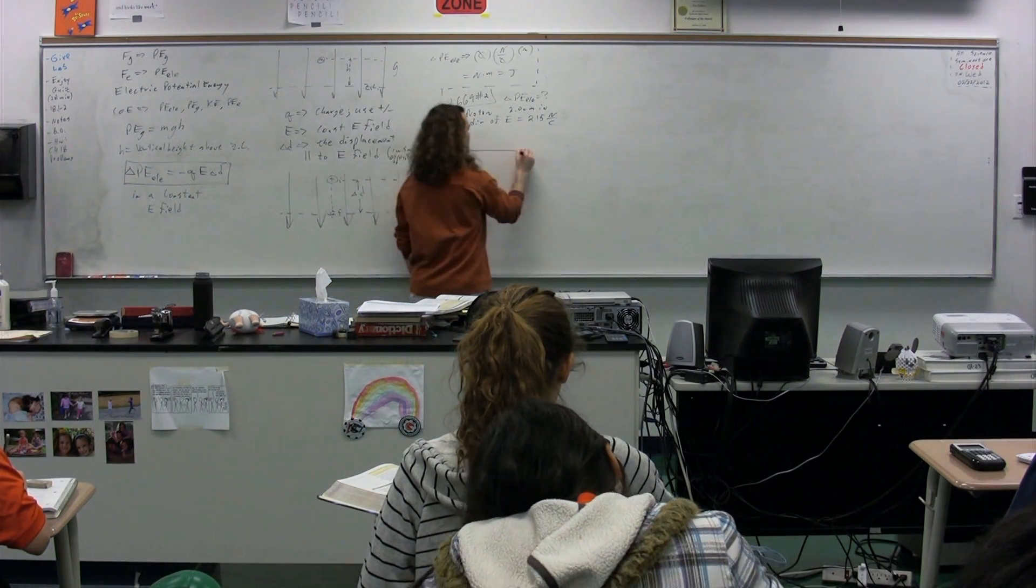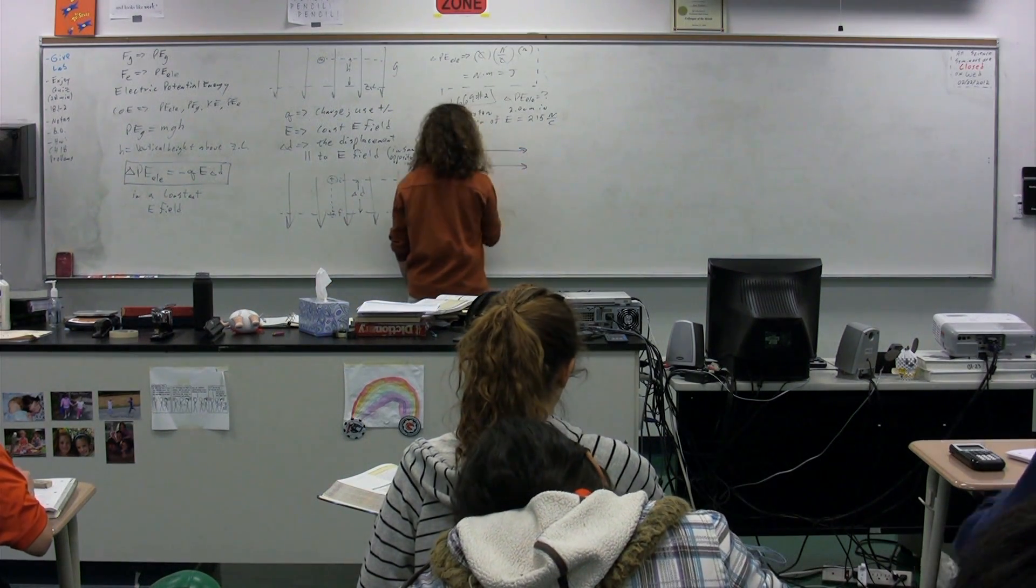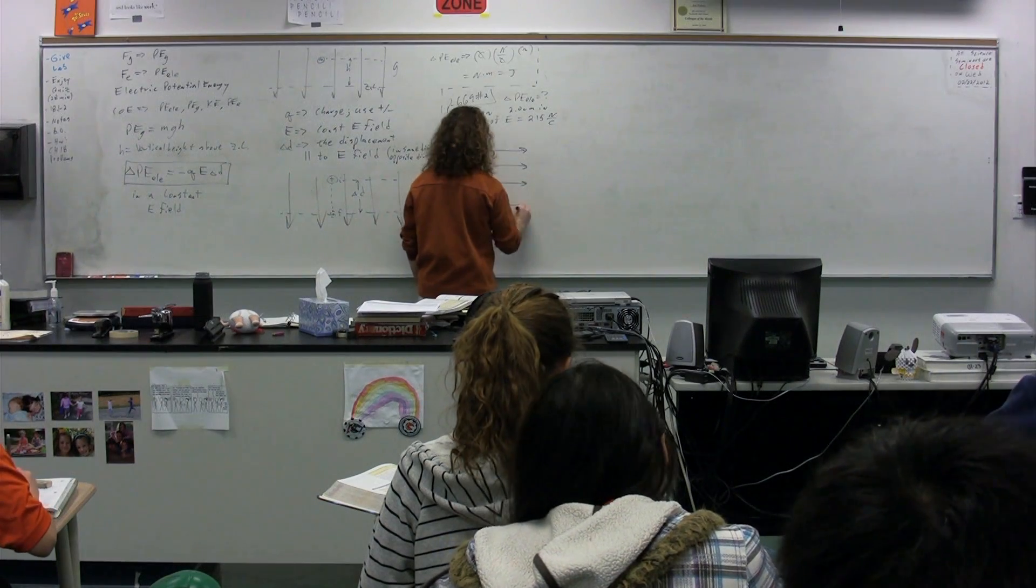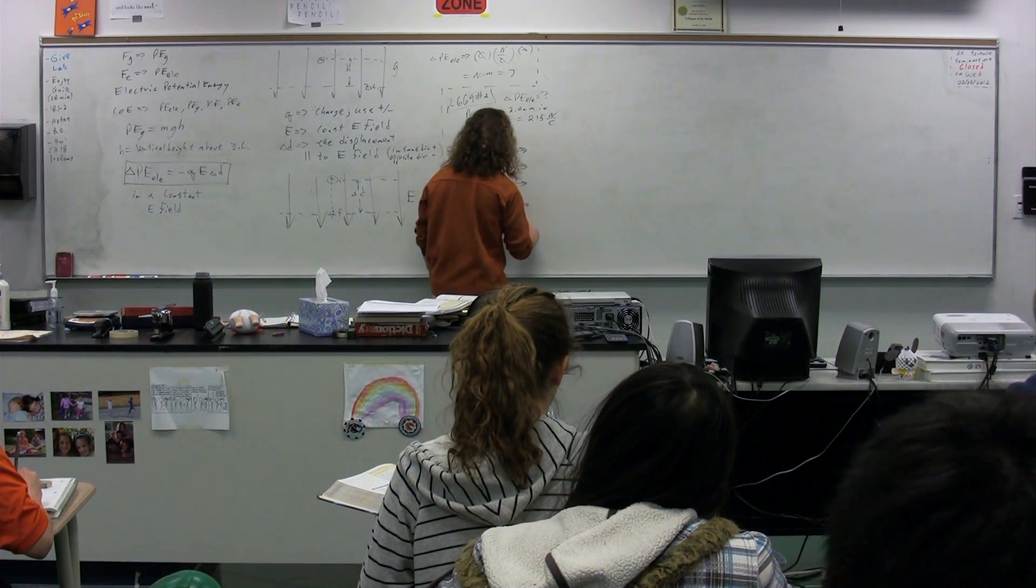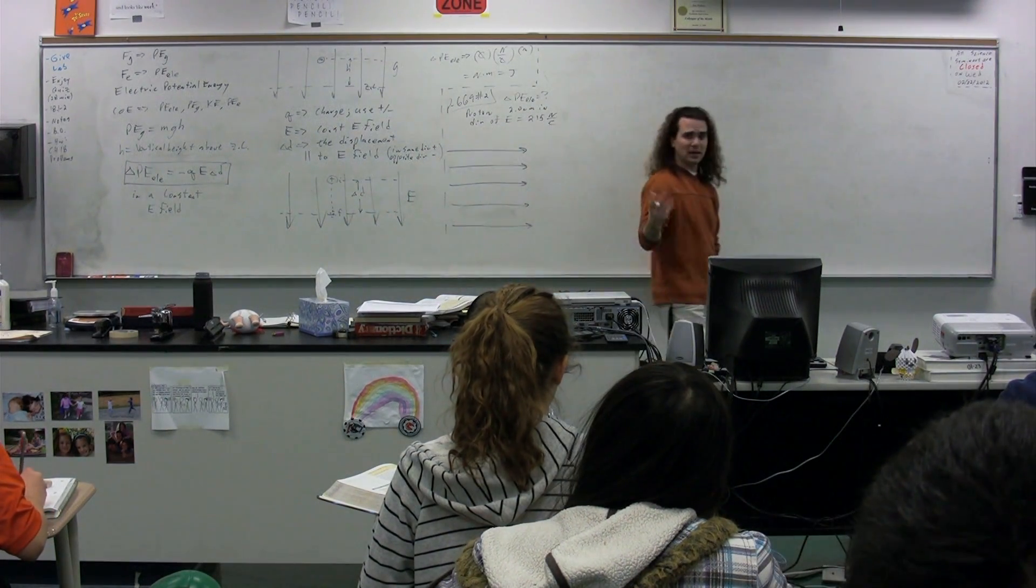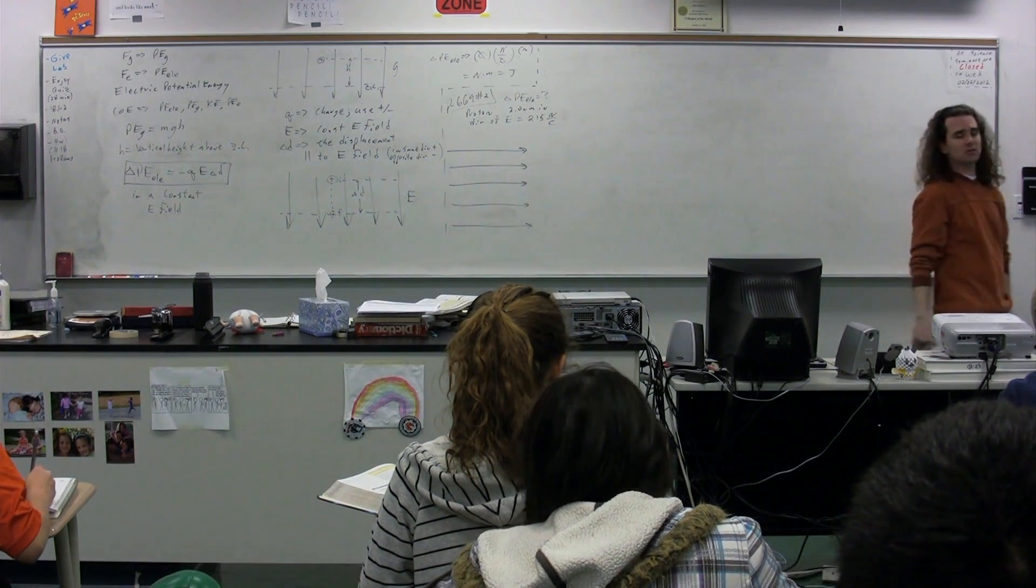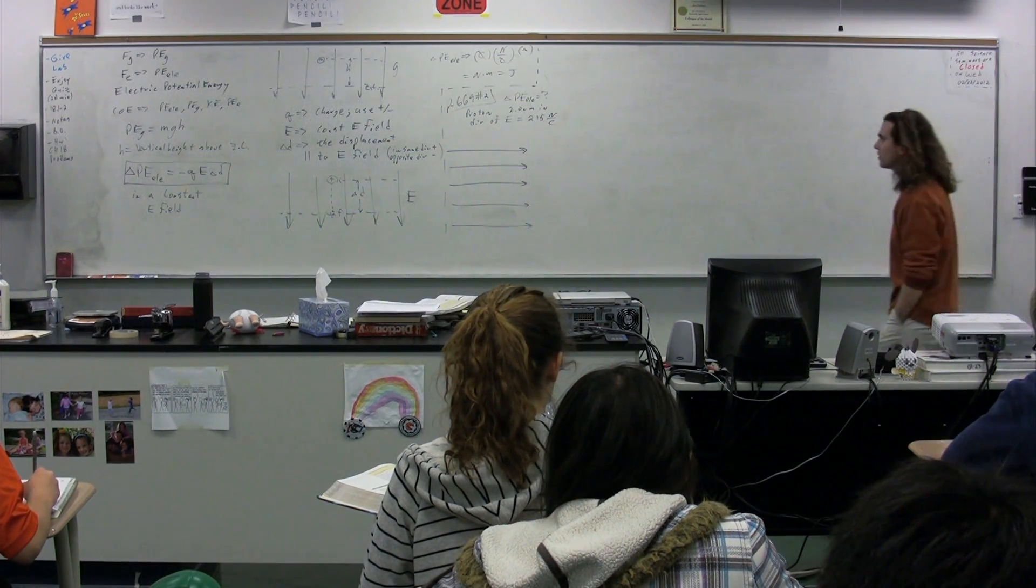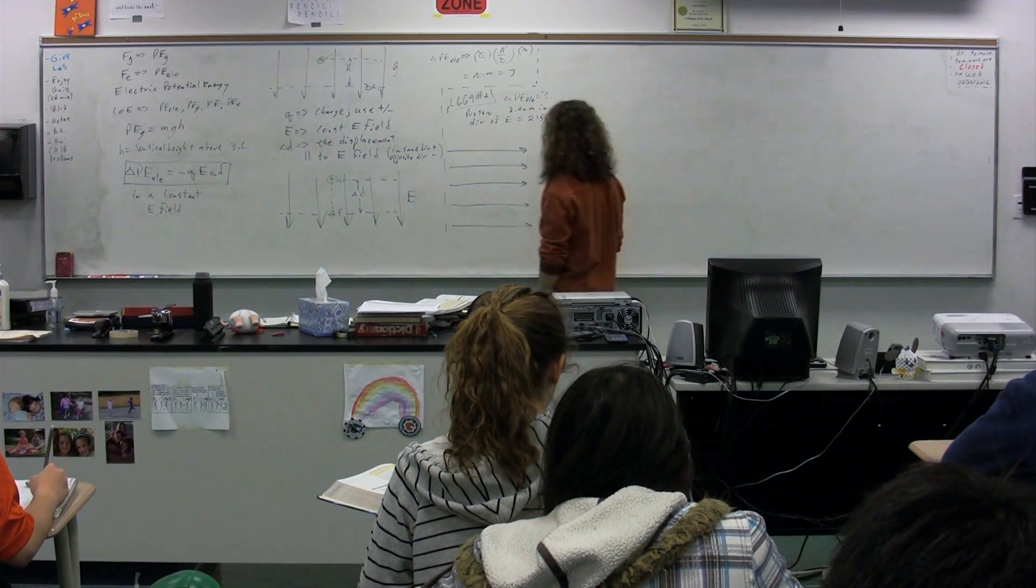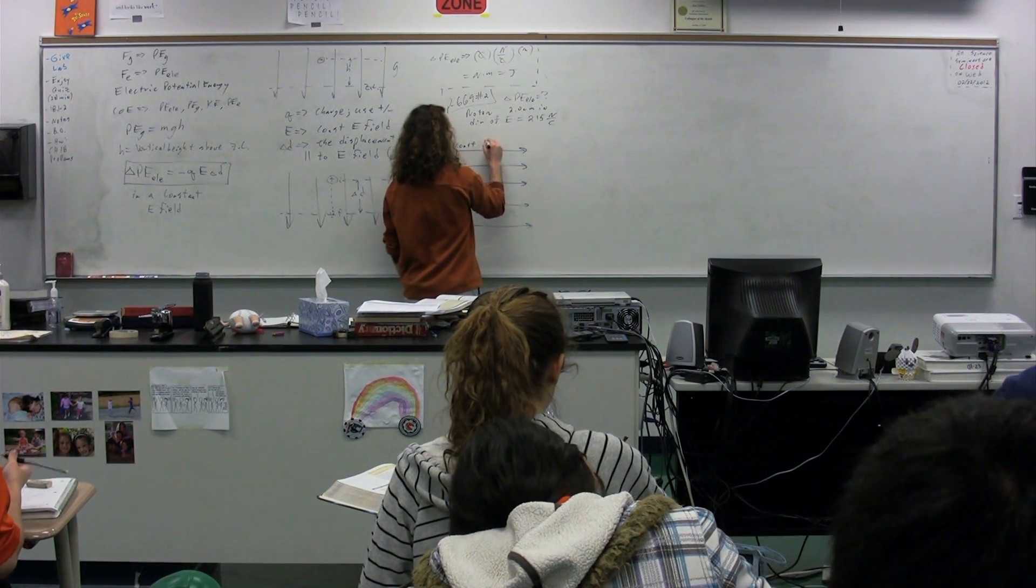So, let's set up a constant electric field and say that it looks like this. It does not give the direction of the electric field, so I'm just picking to the right. It could be to the left, it could be up, it could be down, it could be at some other angle. This is our constant electric field.